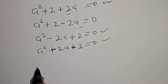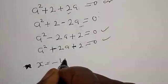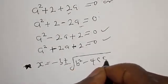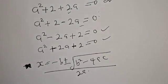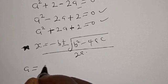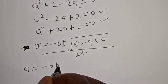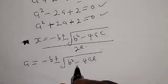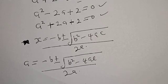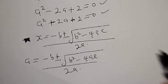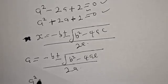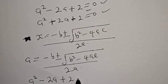Now let's solve using the quadratic general formula: a is equal to minus b plus or minus square root of b squared minus 4ac, over 2a. Therefore a will now be equal to minus b plus or minus square root of b squared minus 4ac over 2a. From the first case of the equation, let's start with a squared minus 2a plus 2 is equal to 0.